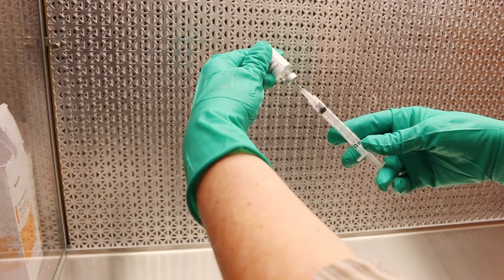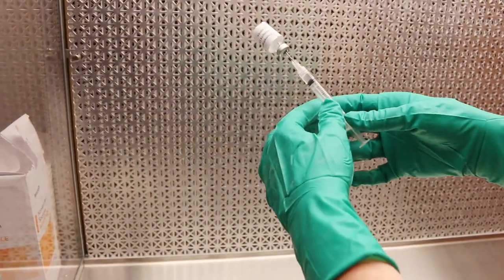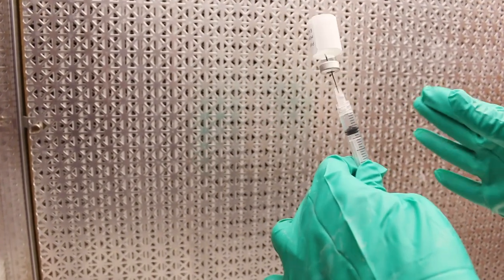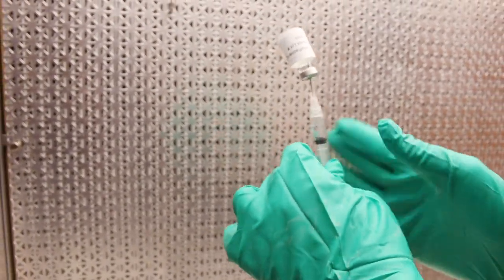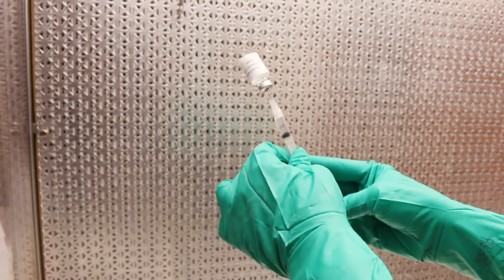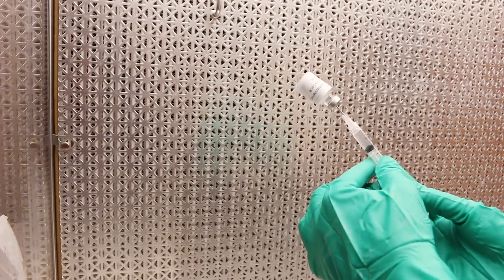Step twenty, remove slightly more than the desired dose and move bubbles to the top by bracing the syringe against your palm and tapping the barrel of the syringe. Step twenty-one, push the plunger on the syringe to expel air and any extra fluid back into the vial.